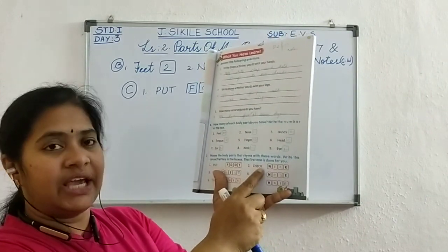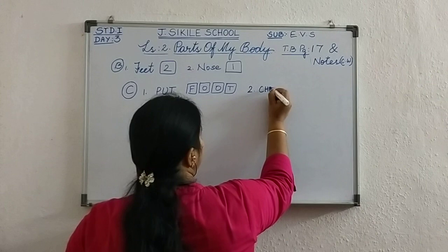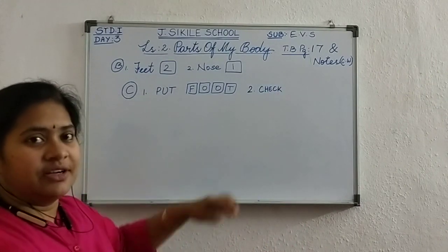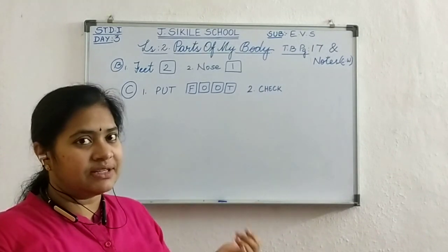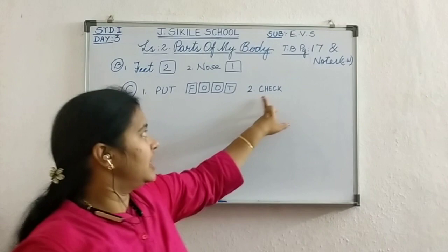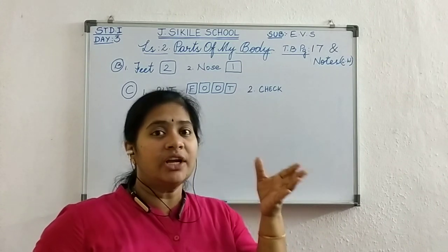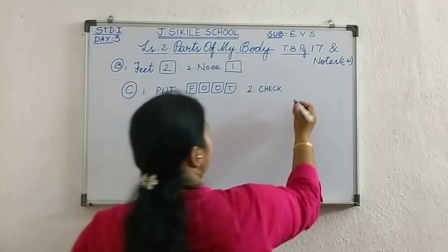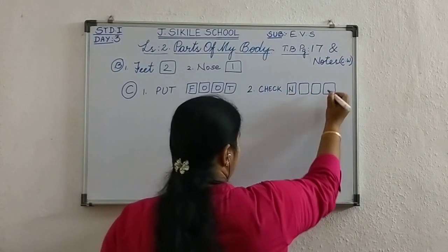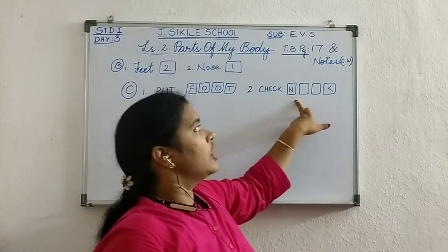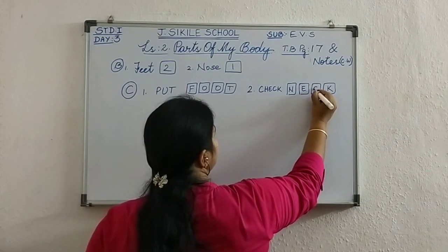Number two question: C-H-E-C-K, check. With the word check, which part of our body is rhyming? Eye? Nose? Neck! Check — neck. It is rhyming. Here four boxes are given in red color, and N is already there with black letters. So with check, the rhyming body part is neck: N-E-C-K.